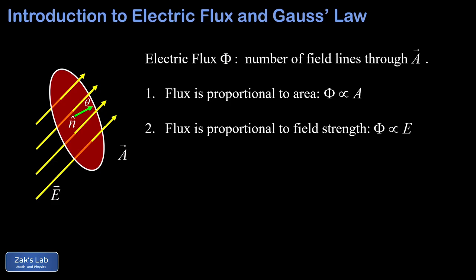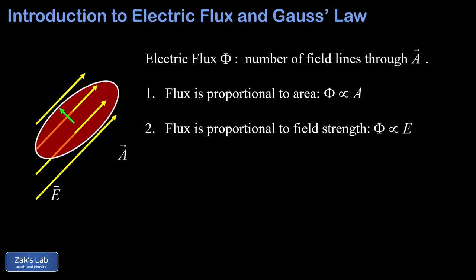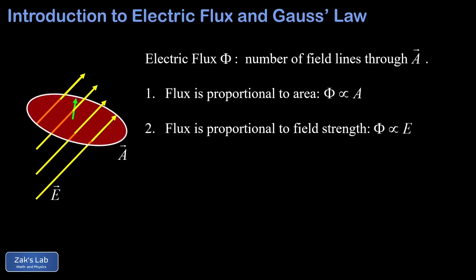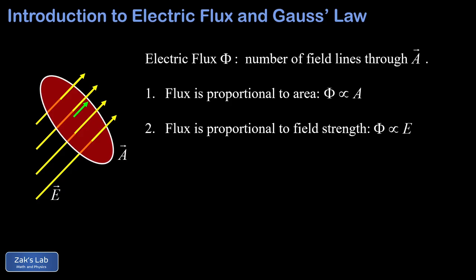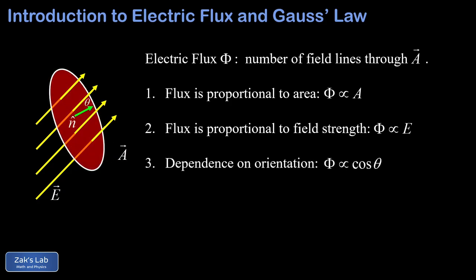Finally, the flux also depends on the angle between the area patch and the electric field. If we rotate our area patch until it's parallel to the field, then no field lines are going to pass through the area element and we get zero flux. Alternatively, an alignment perpendicular to the field would maximize the number of captured field lines and maximize the flux. To quantify this statement about orientation, we use the normal vector to make a precise mathematical statement. If theta is the angle between the normal vector and the electric field, then the flux is maximized when theta is zero and minimized when theta is 90 degrees, meaning our flux is proportional to the cosine of theta.